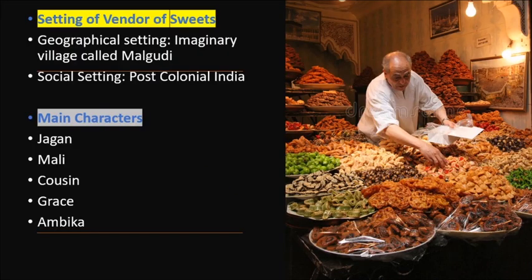Now looking at the setting of The Vendor of Sweets. Setting means the background. First, you can look at the geographical setting, which is the imaginary village called Malgudi. You can see this village Malgudi in most of Narayan's books. The social setting is post-colonial India, meaning after liberating India from British rule.